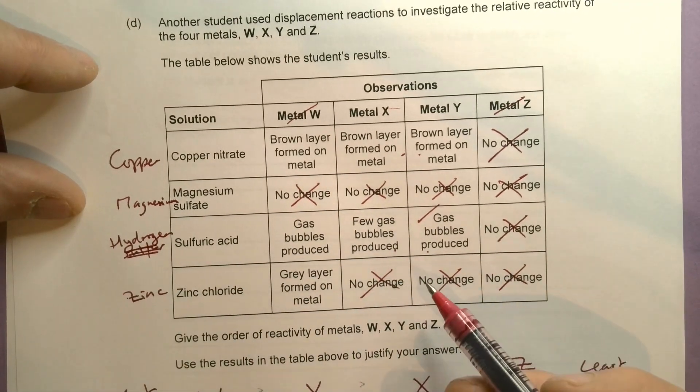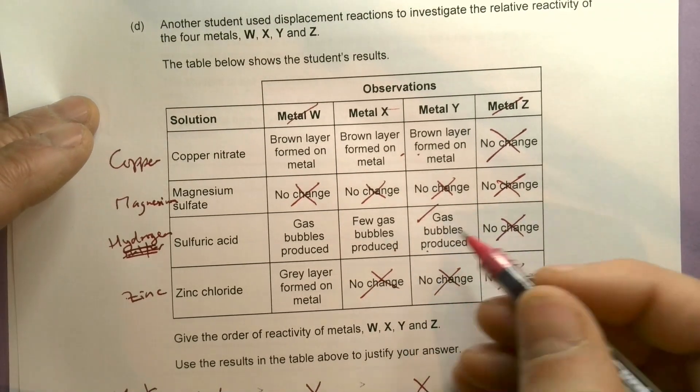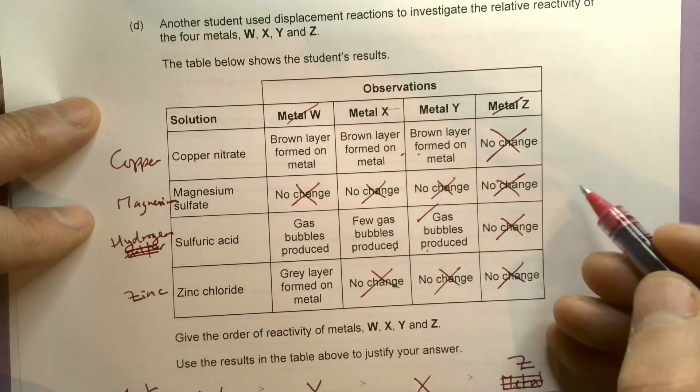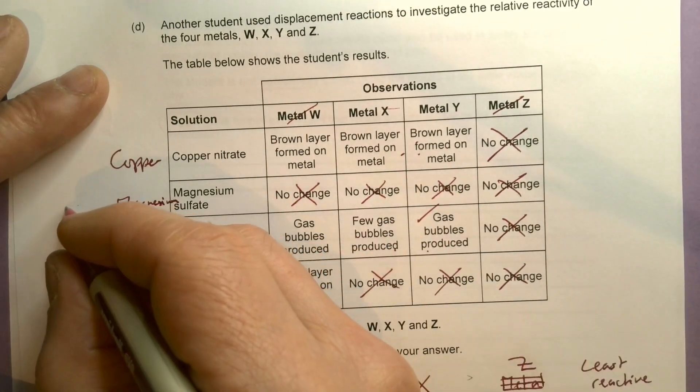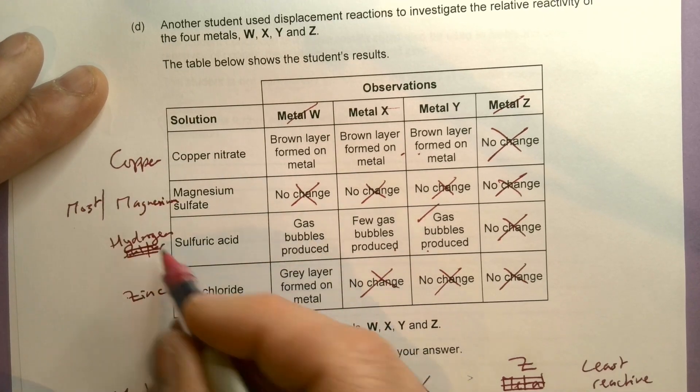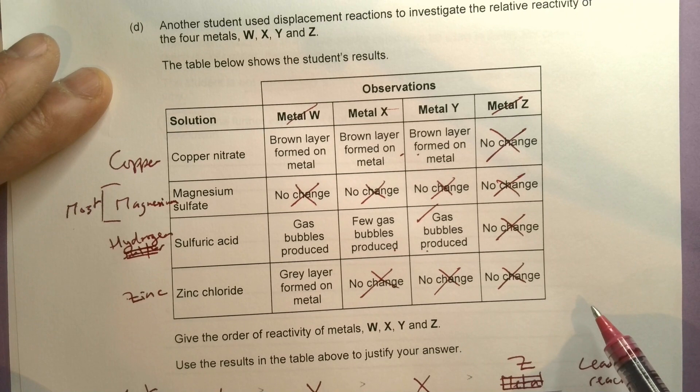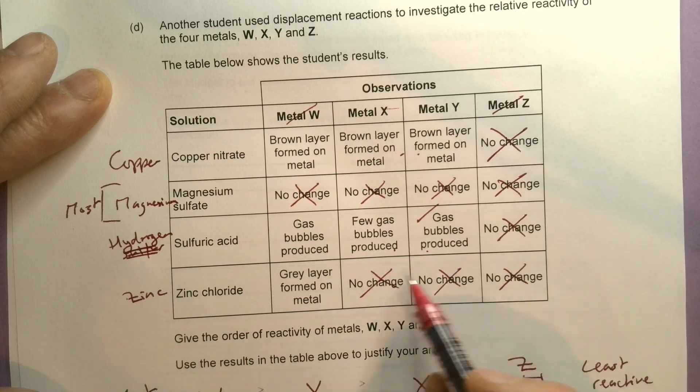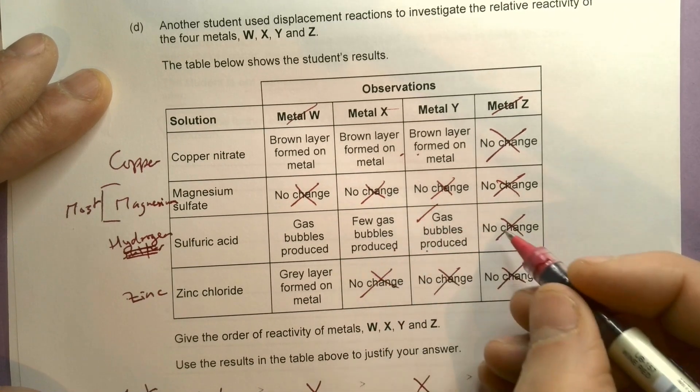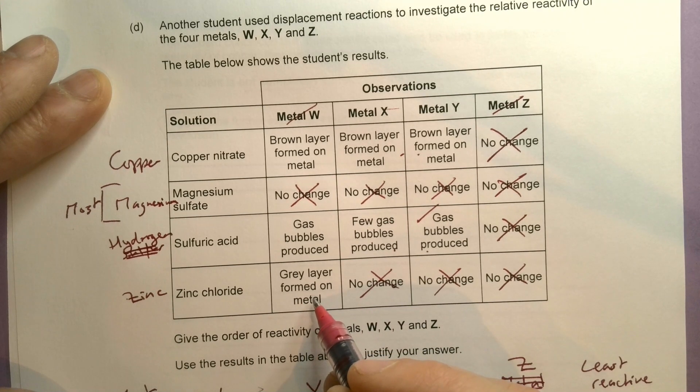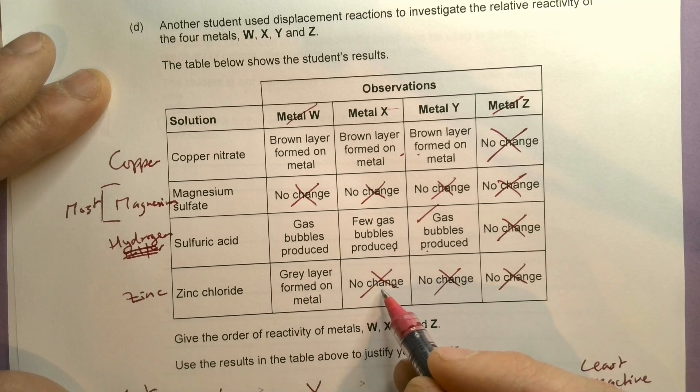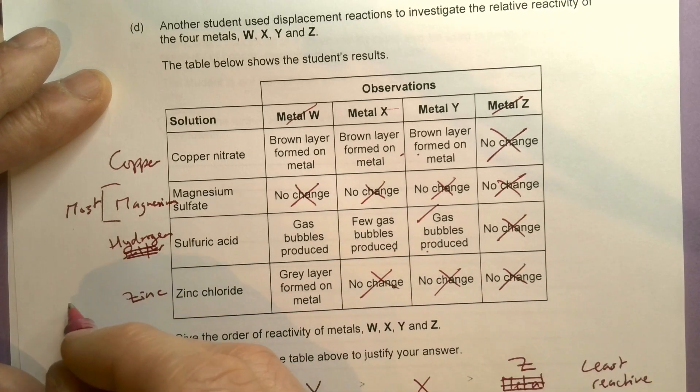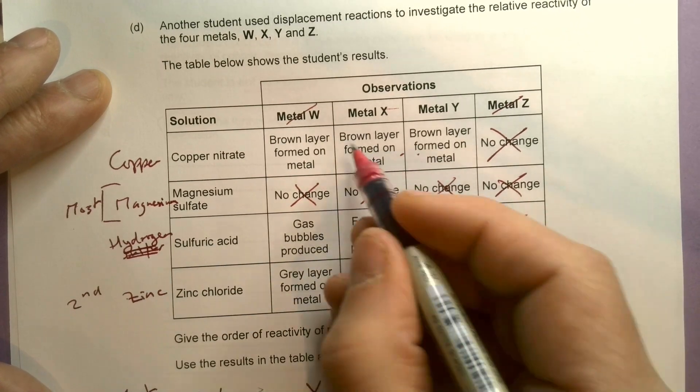What we're looking for now is reactions. Magnesium doesn't react with any of them, so magnesium is going to be the most reactive. Which one's going to be the least reactive? Reading this way, we've got three changes here. Zinc looks quite reactive. It only reacts with metal W, so that looks like it's second.